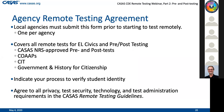There is something called an agency remote testing agreement. This is a form that will ask every agency intending to do remote testing to fill out one per agency. It will cover all possible tests you can use for remote testing for EL Civics or pre- and post-testing - that would be the CASAS NRS-approved pre- and post-tests, the COAP assessment deliveries, the CIT, or the Government and History for Citizenship. We will ask you to tell us how you're going to verify student identity.